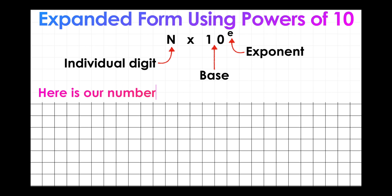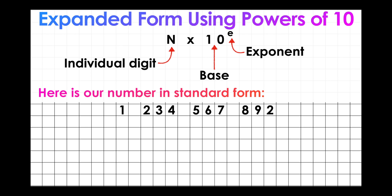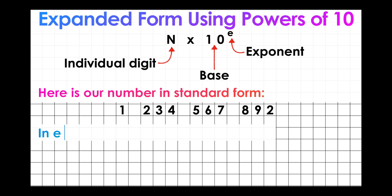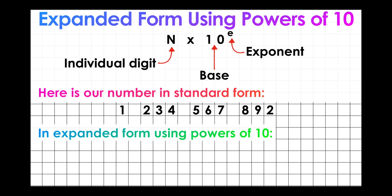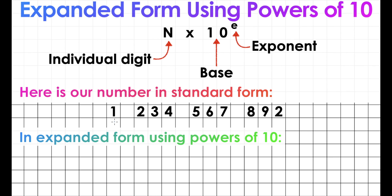Here is our number in standard form. Remember, we had 1,234,567,892. Let's write this number again in expanded form using powers of 10. We'll start with our first number — in this case it's the 1 in the billions position. We'll replace n with 1 multiplied by 10. For the exponent, we just count the number of digits behind the 1: 1,2,3,4,5,6,7,8,9. That tells us our exponent is 9. So 1 times 10 to the power of 9.